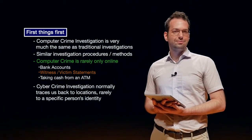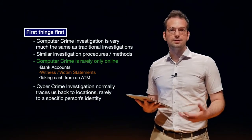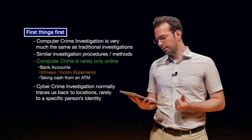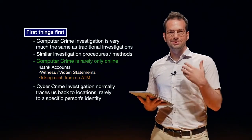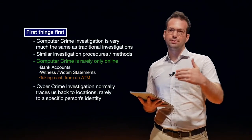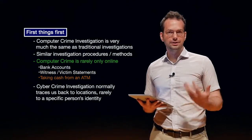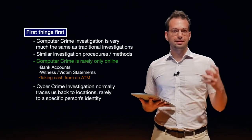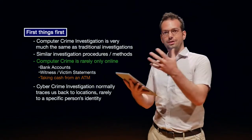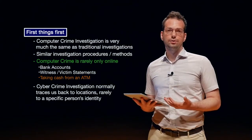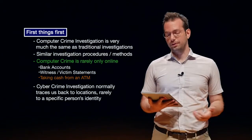Without witnesses and victims, it's very difficult to even start a case. Taking cash from an ATM is one of the most obvious ways criminals go from an online crime to an offline crime. There has to be some connection to criminals in the physical world, and we're looking for what that connection is to find out who they are and how they work.